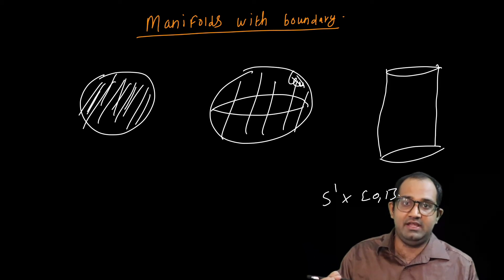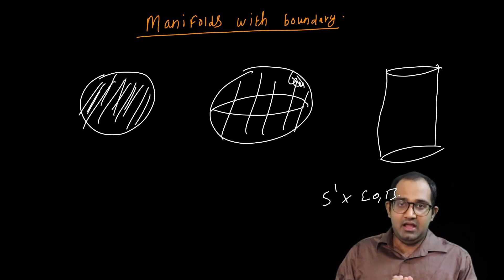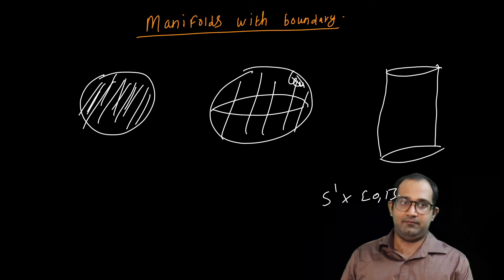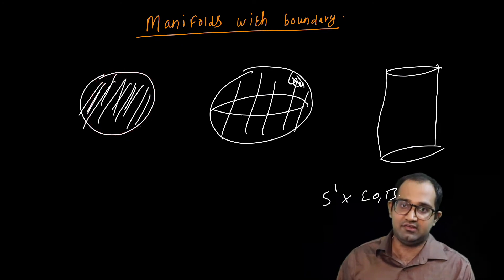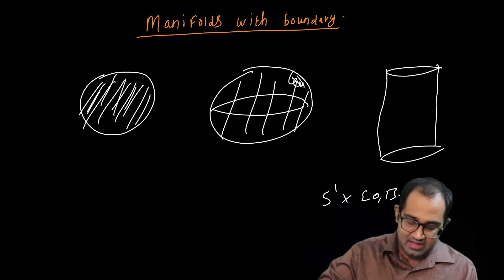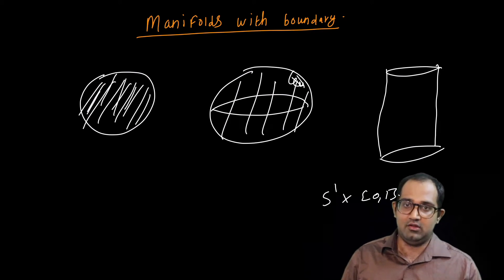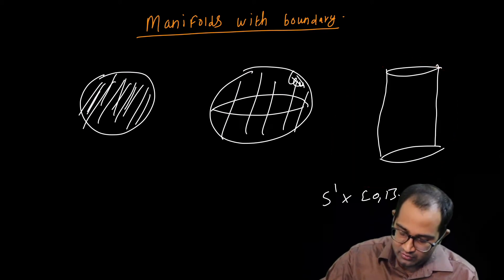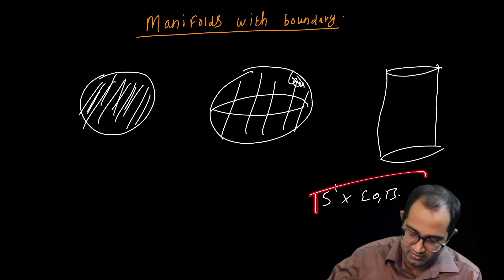The notion of manifold with boundary seeks to capture those sets which look like a manifold, plus they have a boundary component which also looks like a manifold. Examples include the closed disk — just take the usual disk along with its boundary circle. Closed disks are the prototype for manifolds with boundary. Another example is a closed ball. We have already seen that open balls are manifolds and spheres are manifolds; when you put them together, you get a manifold with boundary. The third prototype example is a cylinder including its two boundary circles. A cylinder is an object of the type S1 cross [0,1].